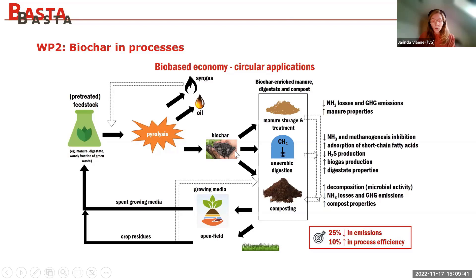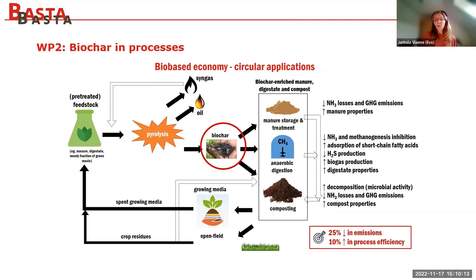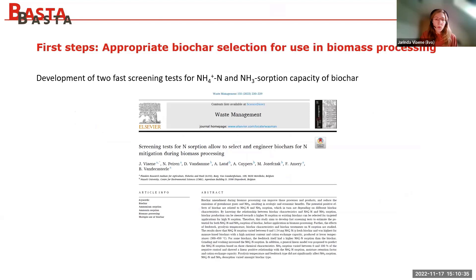Biochar can be very diverse depending on the feedstock used and the pyrolysis conditions, so the characteristics are very different. This makes it complex for a company wanting to use it in biomass processing to know which biochar has the potential to optimize the process or reduce losses. In the first step, we looked at fast screening tests to select or engineer biochar with a high potential for sorption of ammonium and NH3.